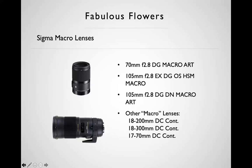Sigma's current macro lenses cover very typical focal lengths for the category. There's a 70mm DG — a full-frame Art lens available for Canon SLR mount and natively for Sony E-mount and L-mount. The new 105mm f2.8 Art DG DN was designed from the ground up for mirrorless cameras and is available for L-mount and E-mount only.